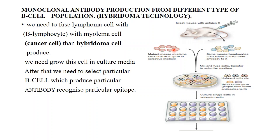After that, we take the hybridoma cells and put them into a culture plate. Every well contains a different type of hybridoma cell. We then extract antibody from every well and examine which antibody recognizes the particular epitope of the antigen. After that, we obtain a single type of antibody from this procedure. Through hybridoma technology, we can synthesize monoclonal antibodies.